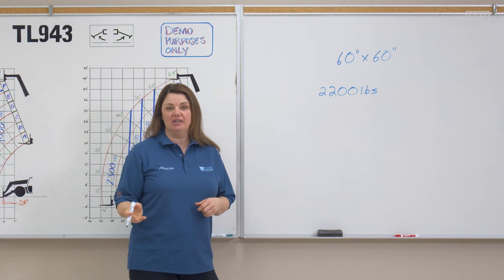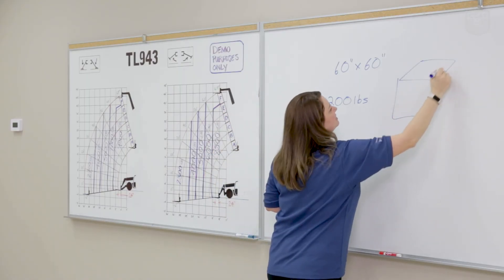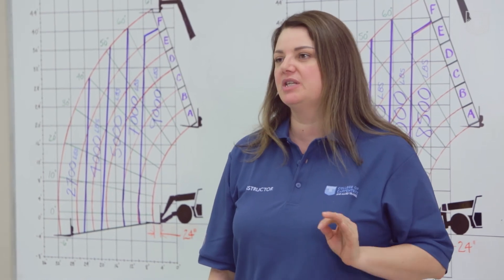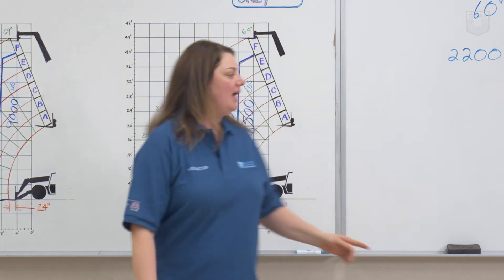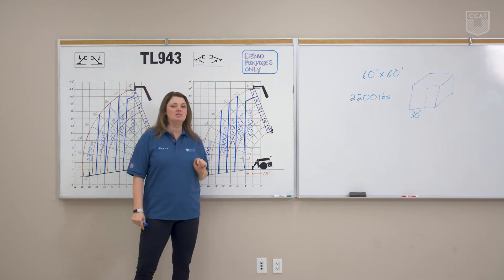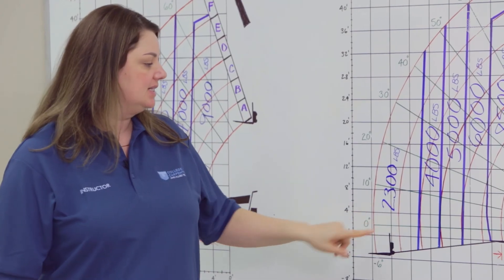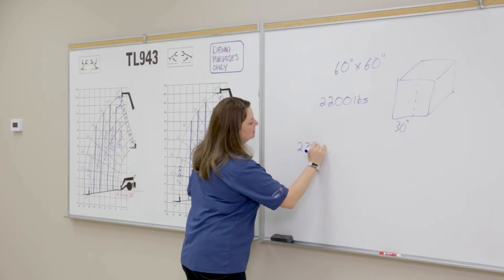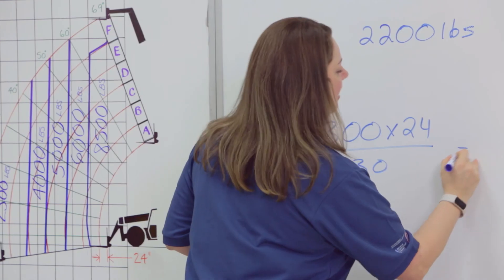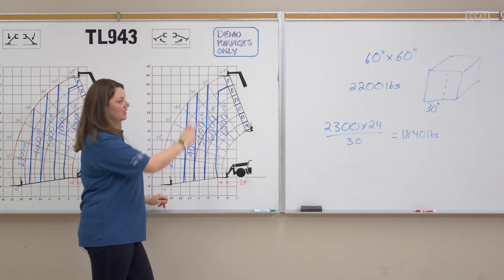In this scenario, we need to make a field calculation because the load center exceeds the 24-inch centers. How we know that is we're looking at our 60-inch by 60-inch and seeing now that our load center will be 30 inches. Increasing the load center always reduces the capacity of the load chart. We know from our load chart that at a 4-foot height and a 26-foot reach that we have a capacity of 2,300 pounds. However, again, we need to take into account our new load center. We're going to have to recalculate our 2,300 pounds to see if we can lift our 2,200 pounds with our new load center. So let's take our 2,300 multiplying by 24 load center divide by our 30-inch new load center to get a total of 1,840 pounds. So we look at our chart and see, can we make that reach? No, because we have 2,200 pounds.